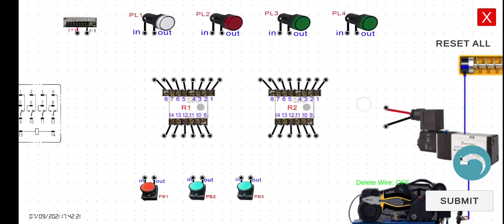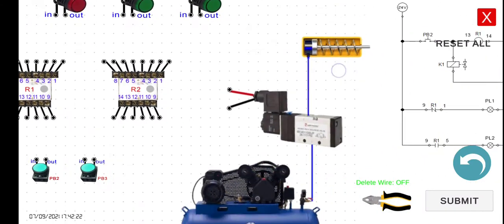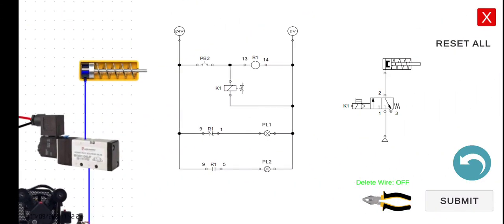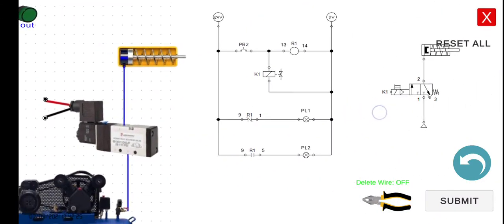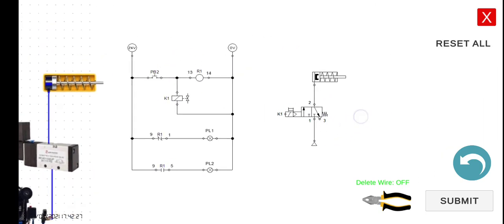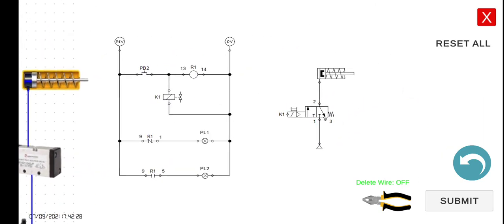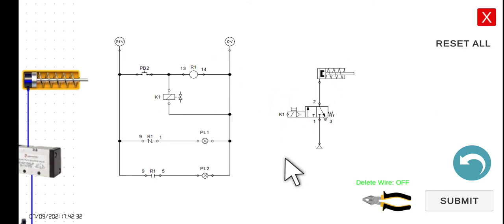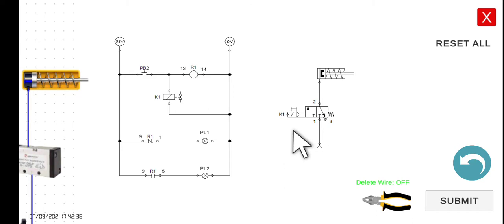Let's explain the circuit first. This is a pneumatic system divided into two parts: the control circuit and the power circuit. For the power circuit, we don't have to connect anything — we just have to connect the solenoid here.